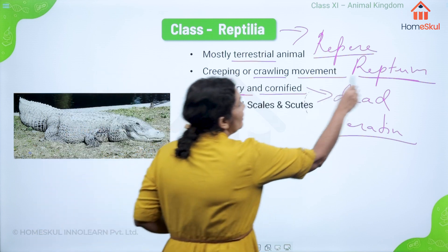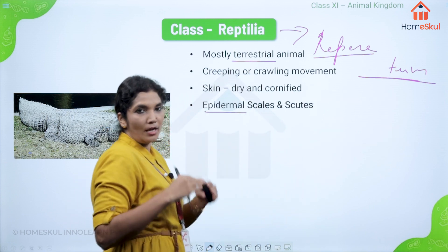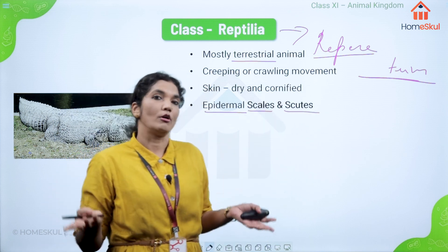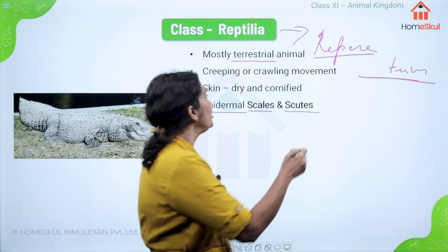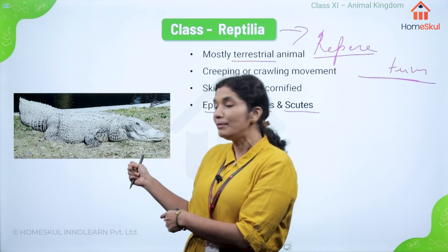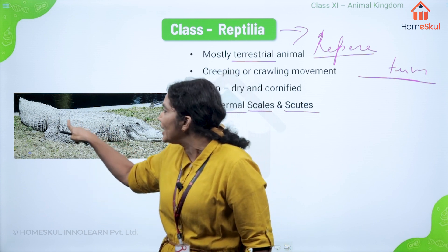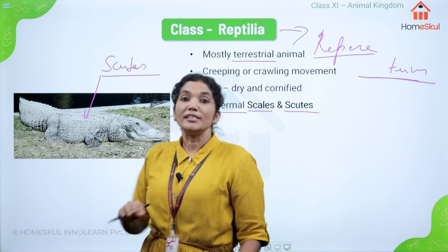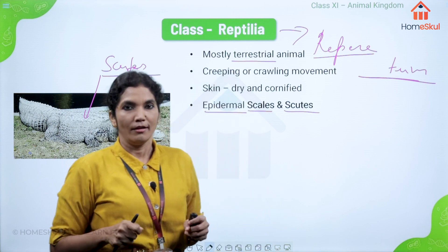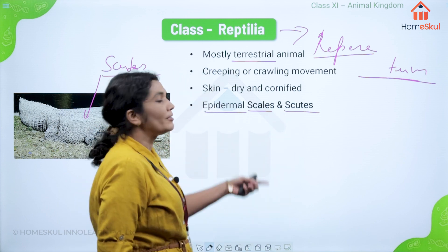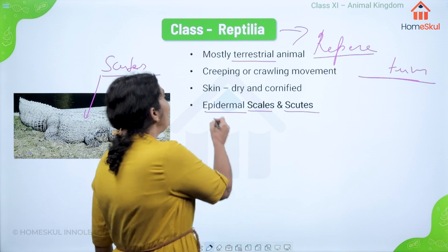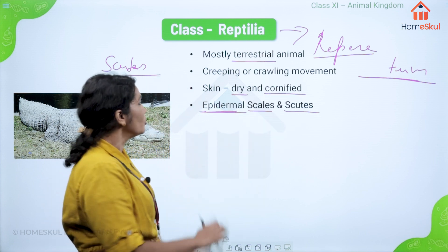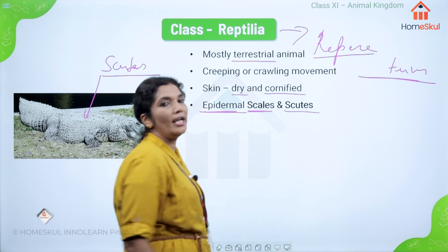Next, most reptilians have epidermal scales or scutes covering the body. Scales are seen in snakes and lizards. Scutes are the hard bony plates seen in animals like alligators, and also the hard shell covering of tortoises and turtles. So the body of reptilians is covered by epidermal scales and scutes.